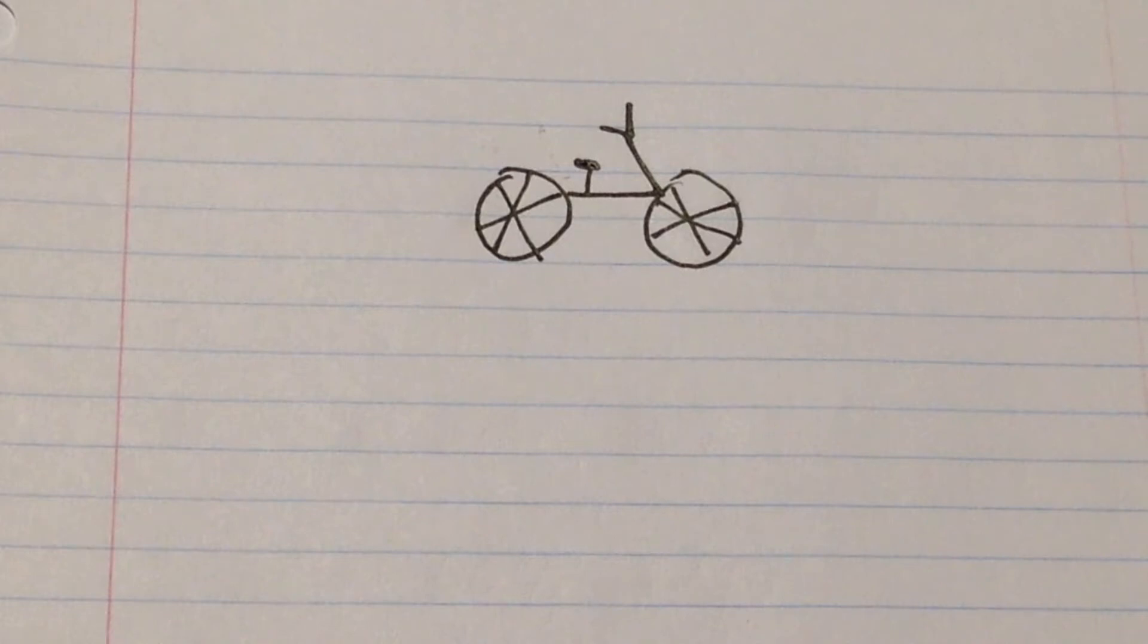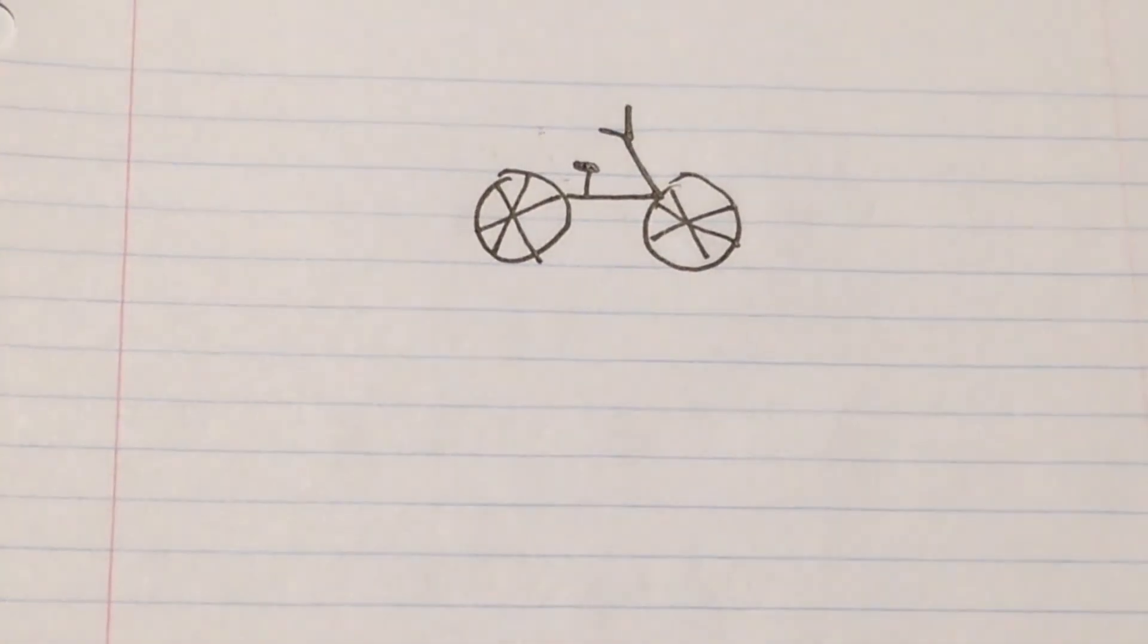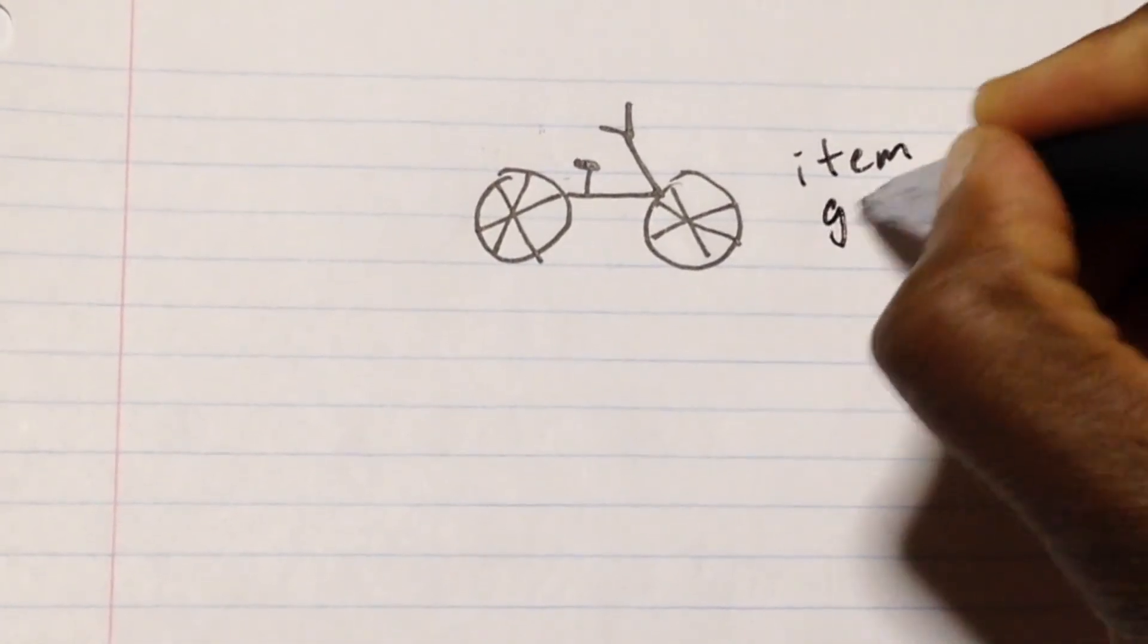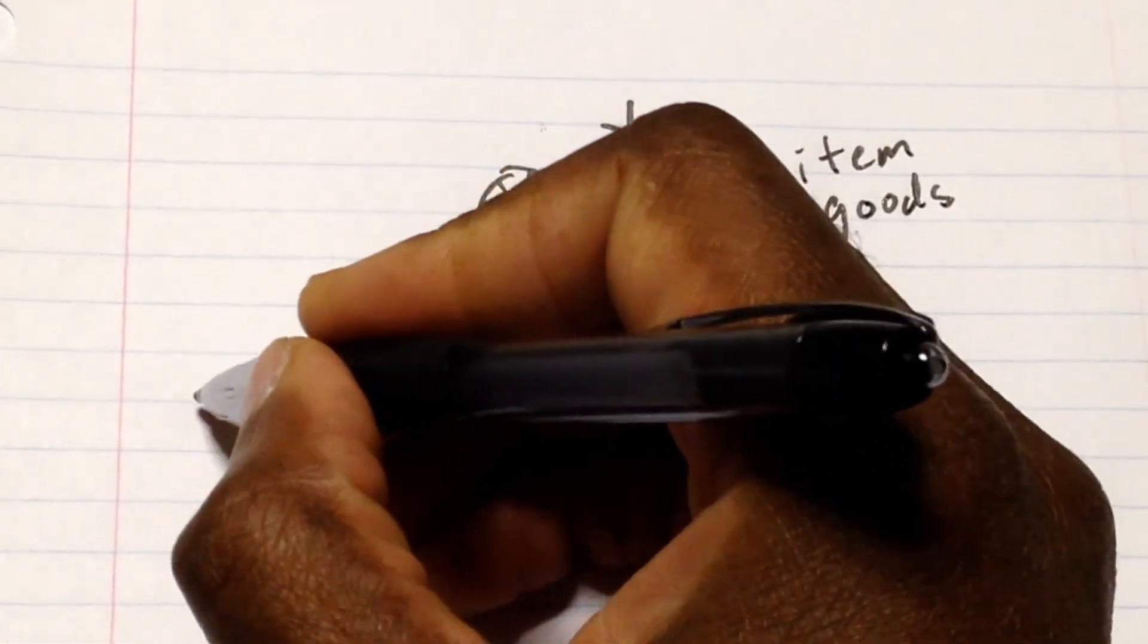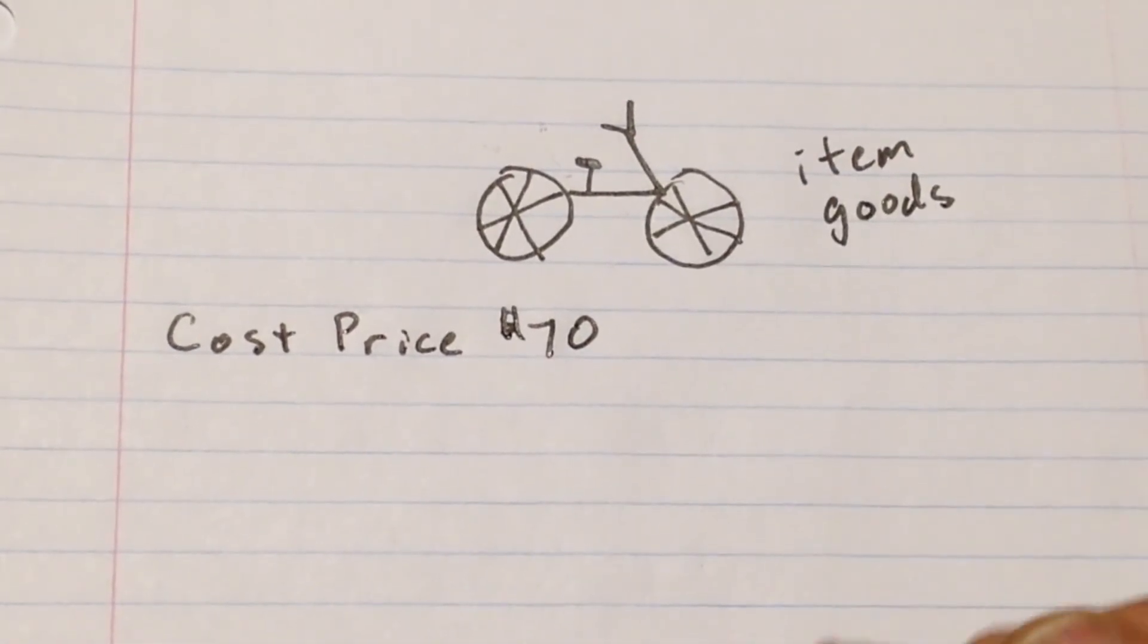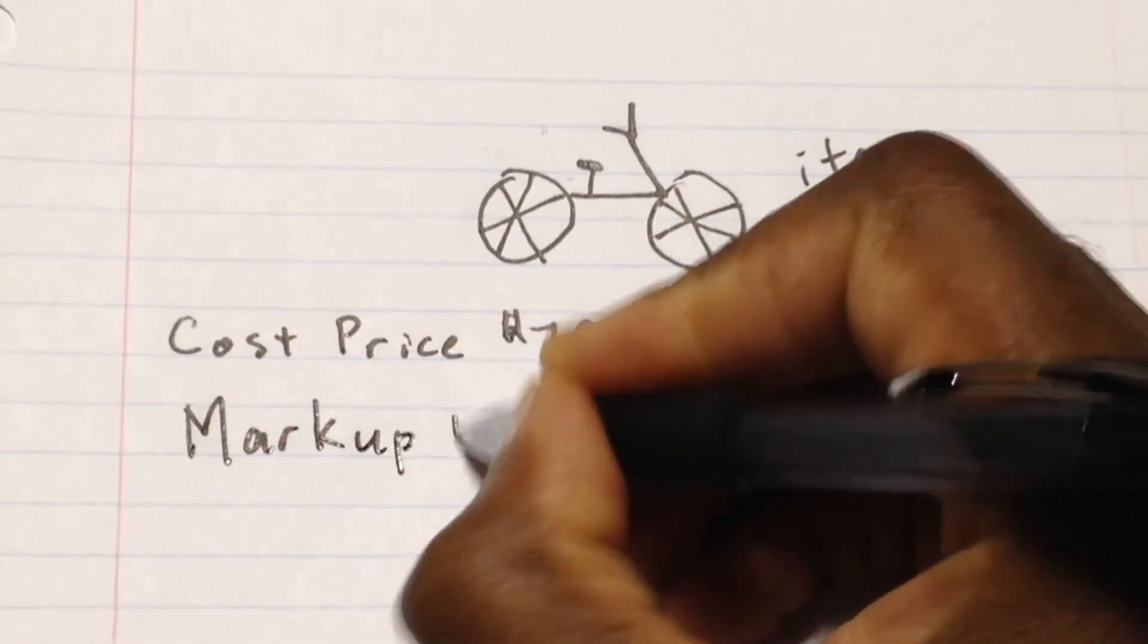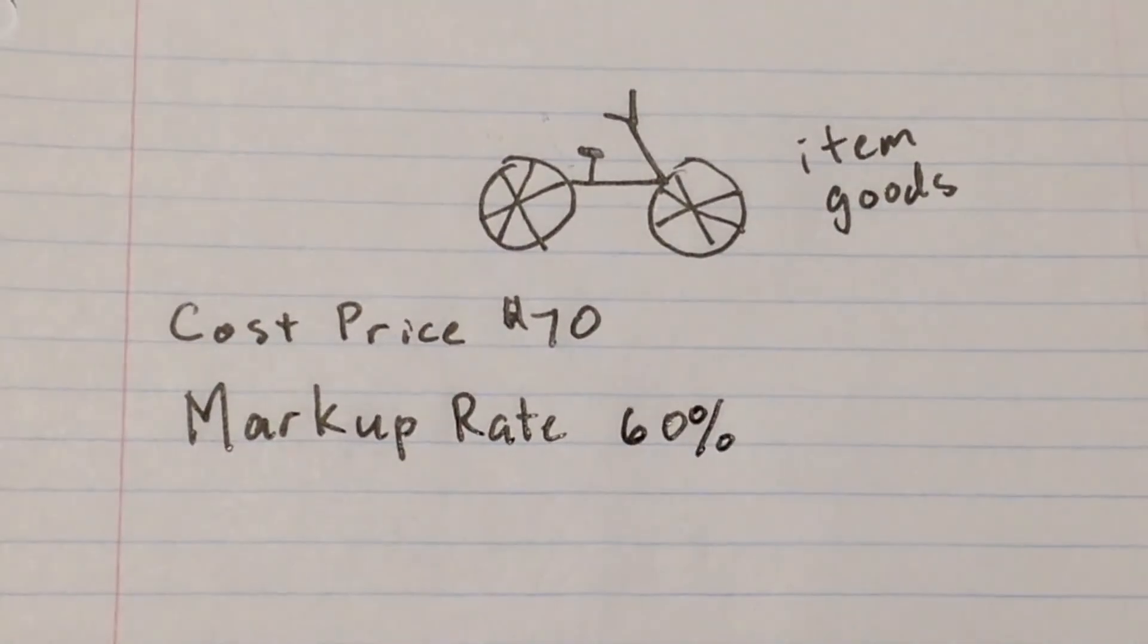Now let's talk about our next item that we're going to sell. And guess what that is? You got it. That's our bicycle. And here, this is our next item or goods. All right. So when we got this bike, our cost price, meaning the price that we paid for the bike is $70. So we paid $70. We want to now bring up the price on it. We want to mark it up to make a profit. So our markup rate is 60%.